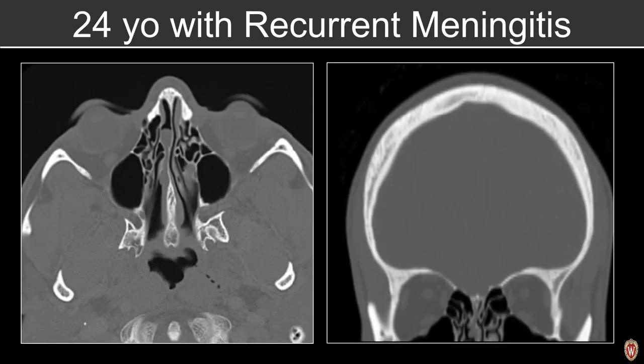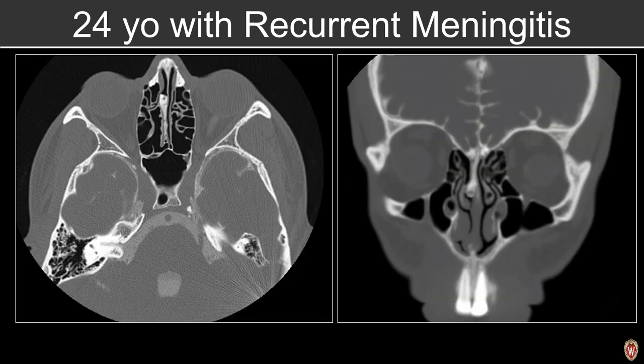In a patient presenting with recurrent meningitis, we want to examine the sinonasal cavity for a potential site of a meningocele or encephalocele. If we see asymmetric opacification of the olfactory recess, we should be thinking about an associated meningocele. In this case with a non-contrast head CT, we can see asymmetric opacification — a red flag — and on cisternogram we can see pooling of contrast and inferior displacement of the olfactory bulb.